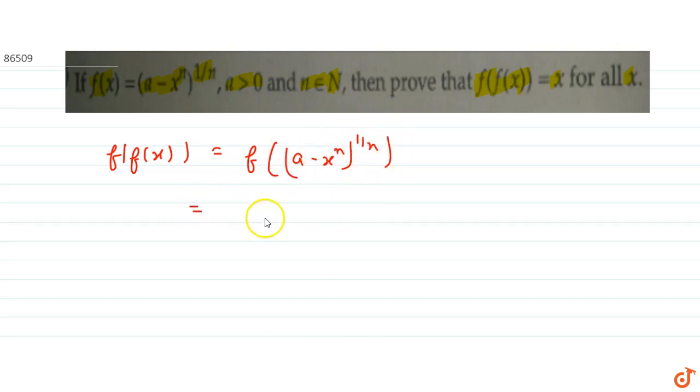So this will be equals to, now simply replace here x by this whole expression. We get a minus, a minus x to the power n whole power 1 by n, this whole power n, to the power 1 by n.